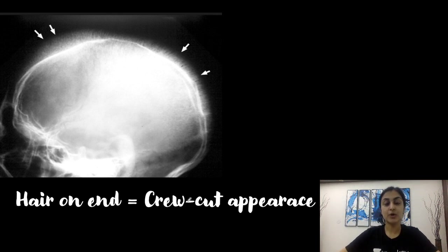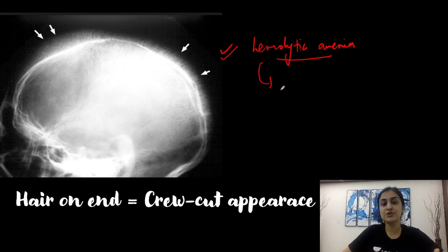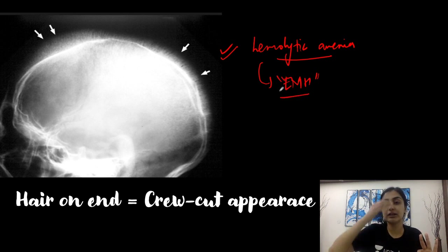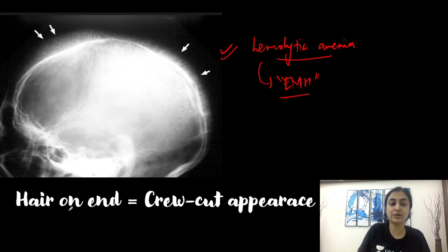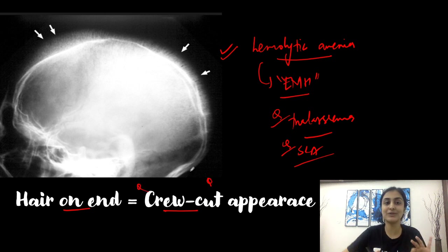This is the hair-on-end or crew-cut appearance — we can see bony trabeculae expanded and rising upward. This appearance is seen with hemolytic anemias. When these conditions lyse a lot of blood, bones undergo extramedullary hematopoiesis, causing the trabeculae to become very thickened. In your options, you can get thalassemia or sickle cell anemia — any hemolytic anemia can produce this appearance.